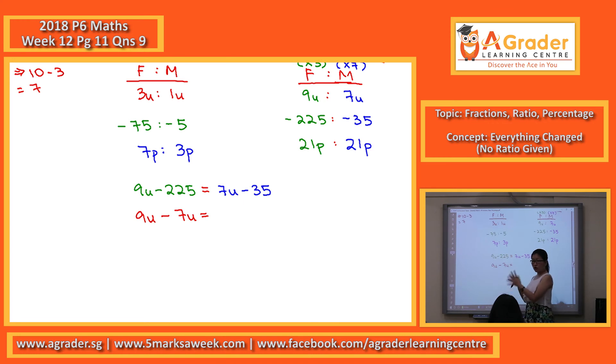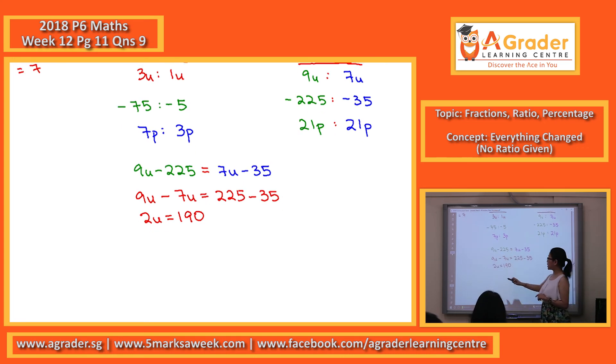And since our left side here is all going to be the units, our right side will have to be the numbers. A negative 225 here, when you shift over, become a positive. This minus 35 will just stay on this side, so we put it down. And now we will get 2U to be 190. With 2U being 190, one unit will be 95.